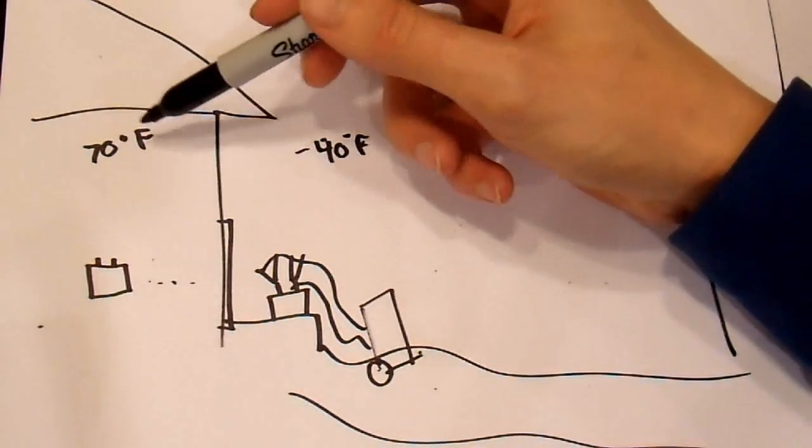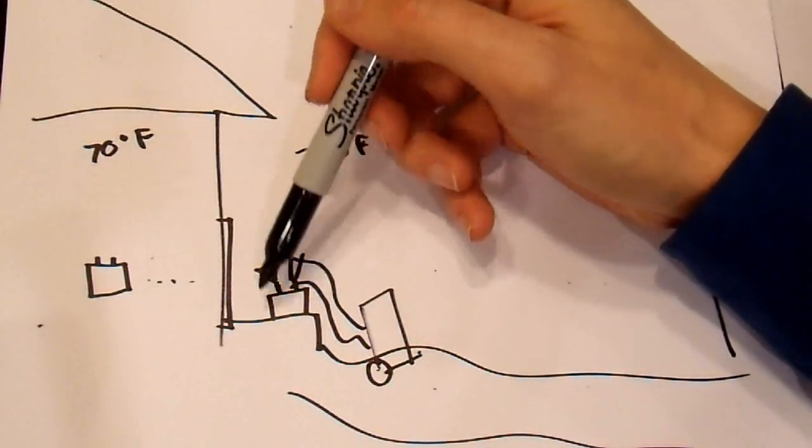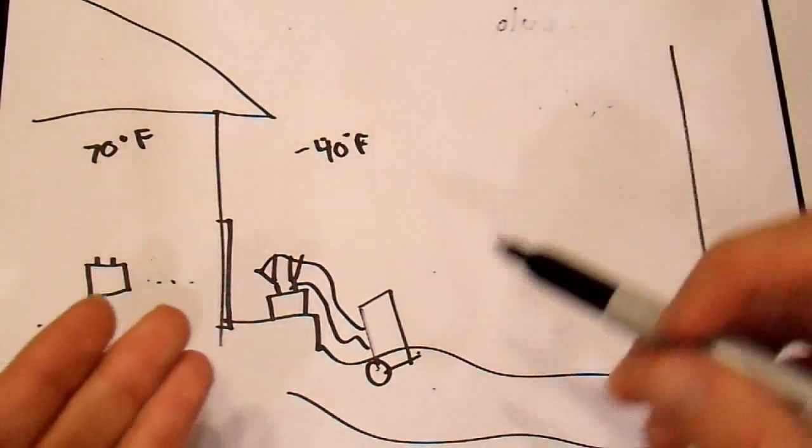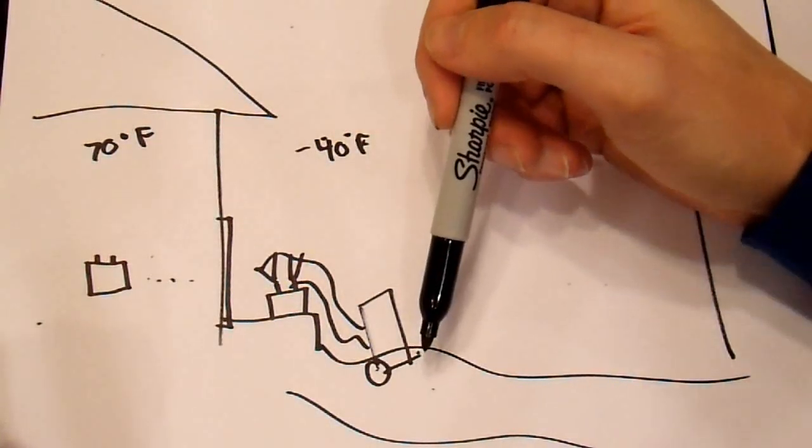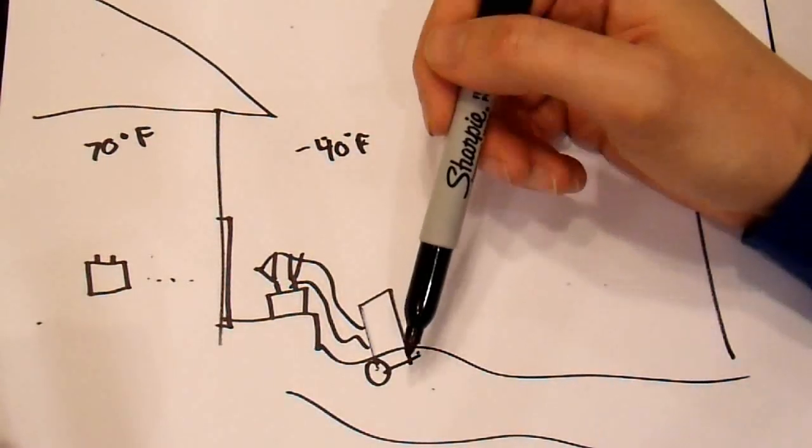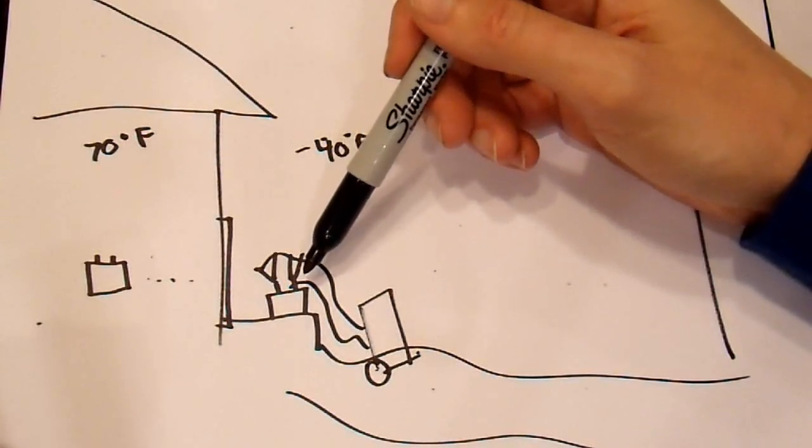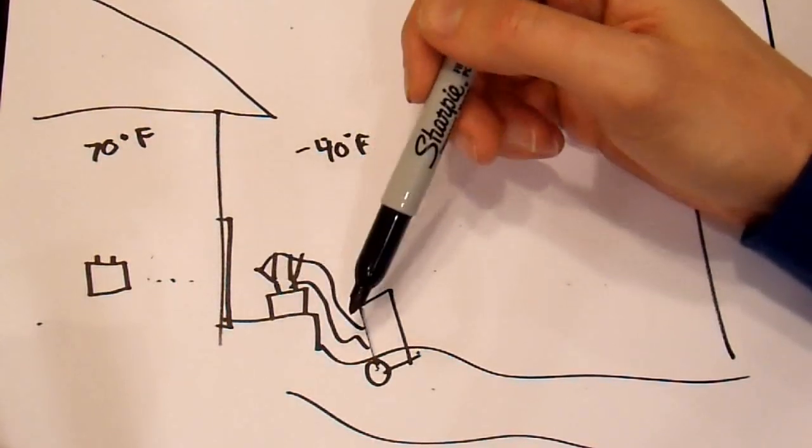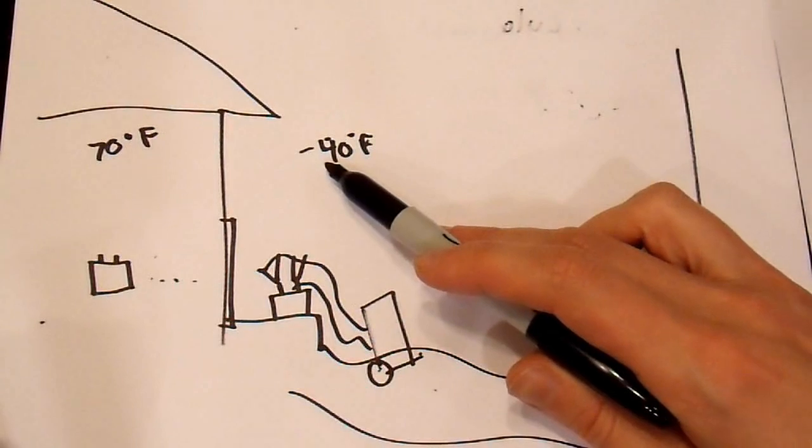Because if I discharge this battery, it took 100 amp hours out of it and then set it outside and let the battery cool off. Well for one it would freeze solid, but we'll ignore that. And I put it on this charger, I would have to put in more than 100 amp hours to bring this back up to capacity. But how's that possible? It's at minus 40 and this graph clearly says that it's about 15 percent available capacity.